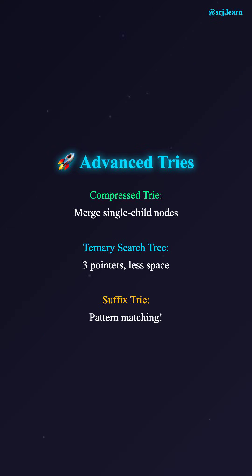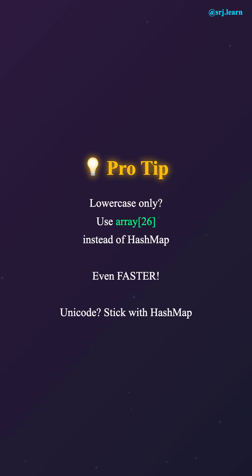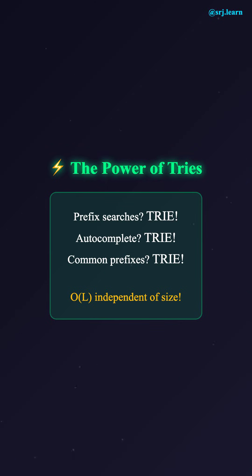You can optimize tries further. Compressed tries merge single-child nodes to save space. Ternary search trees use three pointers instead of a full map. Suffix tries store all suffixes of strings for pattern matching — there's a whole world of trie variations. Pro tip: when implementing a trie, always think about your character set. If you only have lowercase letters, you can use an array of size 26 instead of a hash map for children — this makes it even faster. But if you need to support all Unicode characters, stick with a hash map. Trie beats hash map when you need prefix searches, autocomplete features, or when you have many words with common prefixes. The time complexity for most operations is O(L) where L is word length — that's independent of how many words you have stored.